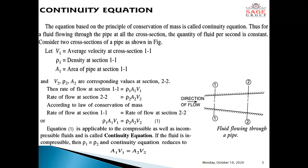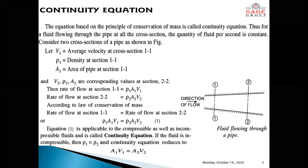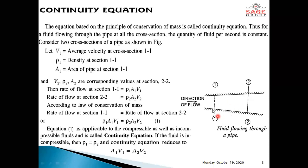Consider two cross sections of a pipe as shown in this figure. Let capital V1 be the average velocity at section 1-1, rho 1 be the density at section 1-1, and A1 be the area of the pipe at section 1-1. And V2, rho 2, and A2 are the corresponding values at section 2-2.